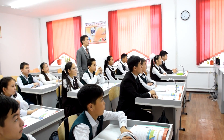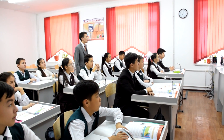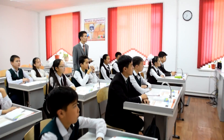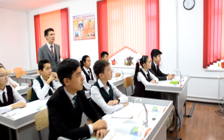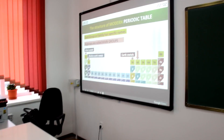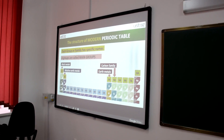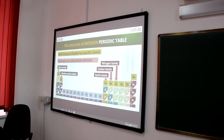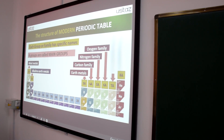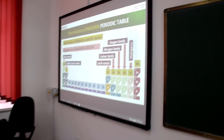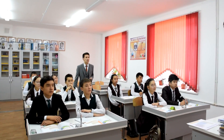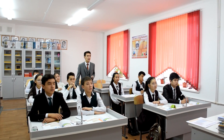Each group or family has specific names. A groups are called main groups. 1A: Alkali Metals. 2A: Alkaline Earth Metals. 3A: Earth Metals. 4A: Carbon Family. 5A: Nitrogen Family. 6A: Oxygen Family, or Halogens. 7A: Halogens. And the last group, 8A: Noble Gases.